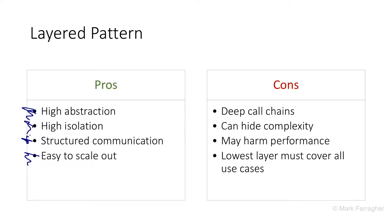Now the cons. The layered architecture offers very deep call chains. To call a data component from the presentation layer, the presentation component calls a business component, which calls a data component, which calls into a database — that's three hops already. If you have presentation components calling each other and then calling business components, which call each other and then go into data, you could easily have call chains 20 or 30 calls deep, resulting in huge stack traces and large nested calls on the stack.